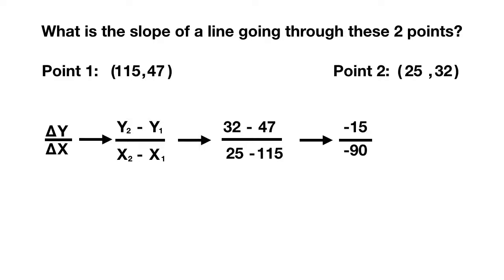Now you should do what you can to simplify this slope. Both 15 and 90 can be divided by what? Both of them can be divided by 15. If you solve this out, you get a slope of positive 1 sixth.